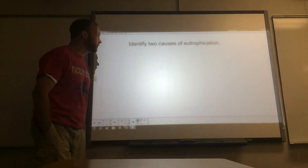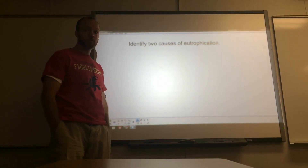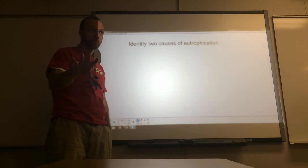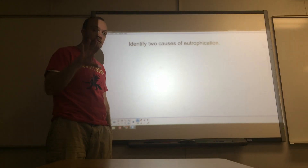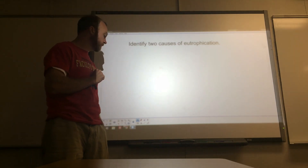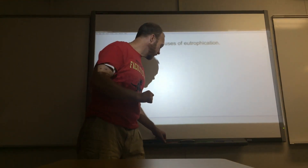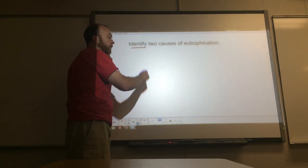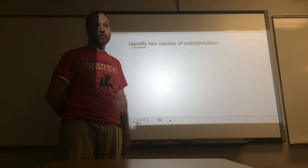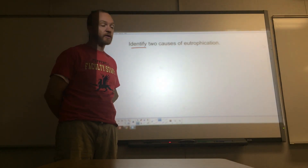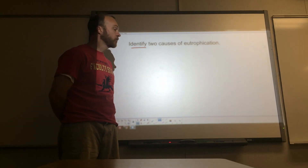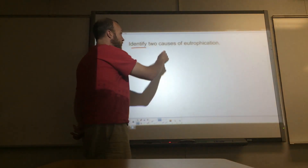Here we have a question: identify two causes of eutrophication. You should have already read about eutrophication before you start this part of the assignment. If you haven't, go ahead and stop the video and go back and read your section on eutrophication. The word 'identify' here is our verb — that's what we're supposed to do. This is one of the few things you can actually do without writing complete sentences, however I still want you to write complete sentences to be in the habit.